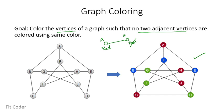If you pick AF, both are of different colors. So if you pick any edge of the graph, both the vertices of that edge will be of different color. That is what we mean by graph coloring.